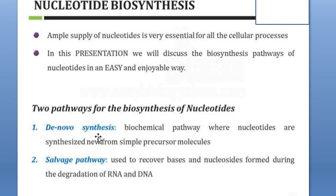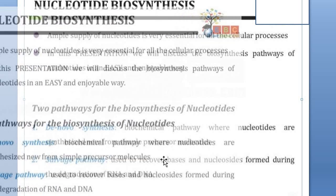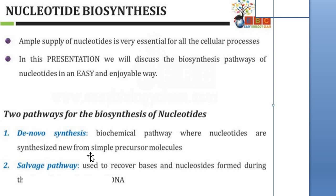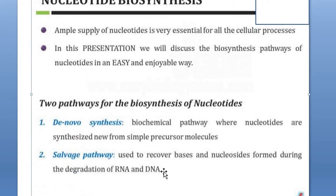Just like we have seen de novo synthesis of fatty acids where we synthesize new fatty acids, here we synthesize new nucleotides from simple precursors present in the body. In the salvage pathway we use the already available nucleotides — for example those in DNA and RNA — and when that DNA and RNA is degraded, nucleosides are released and those nucleosides are used to prepare nucleotides.